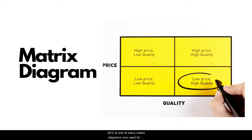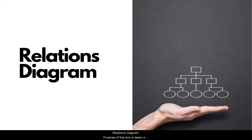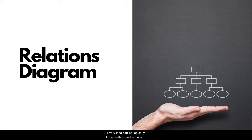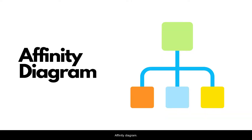Relations diagram: the purpose of this tool is to take a central idea and map out logical or sequential links among related categories. Every idea can be logically linked with more than one idea at a time. It allows lateral rather than linear thinking.